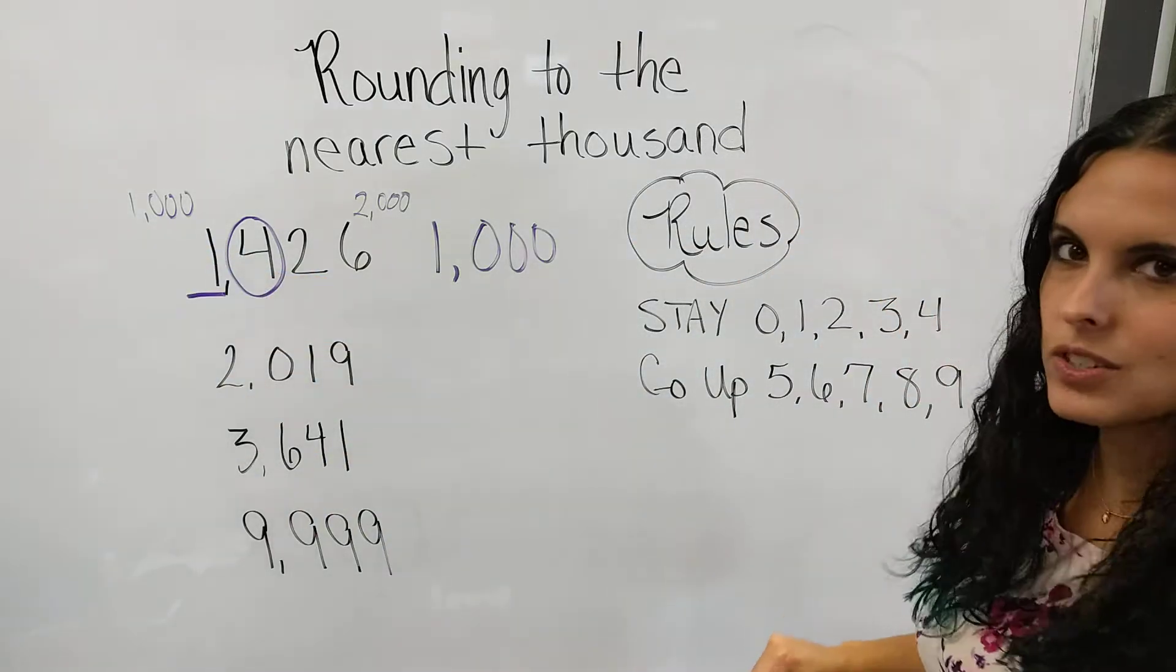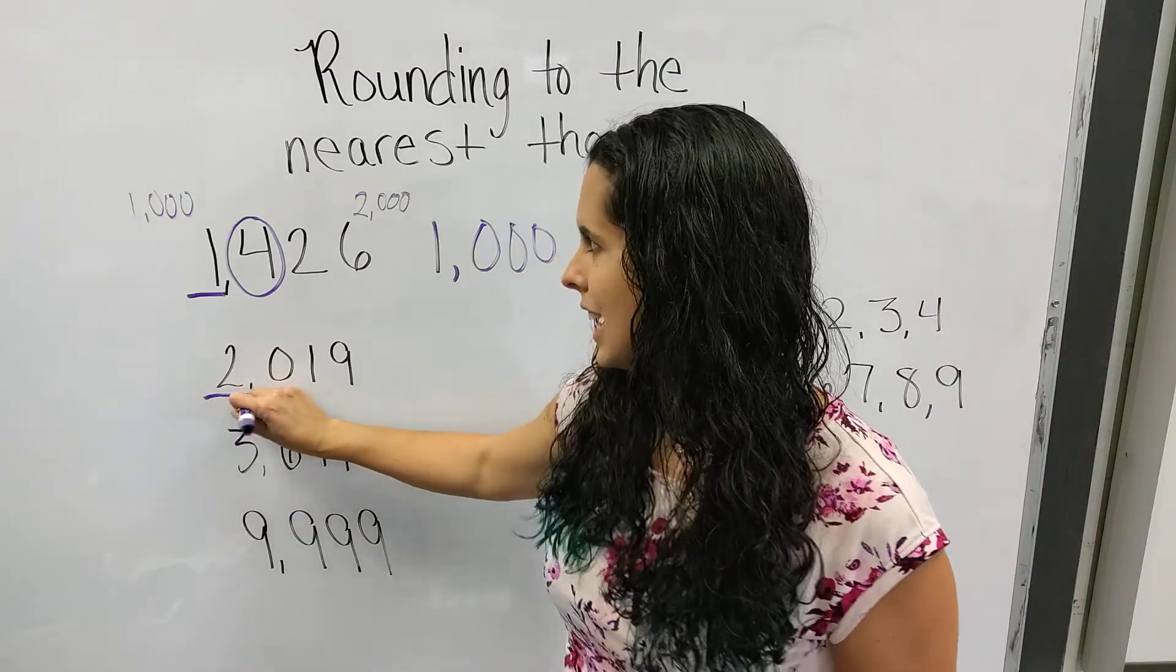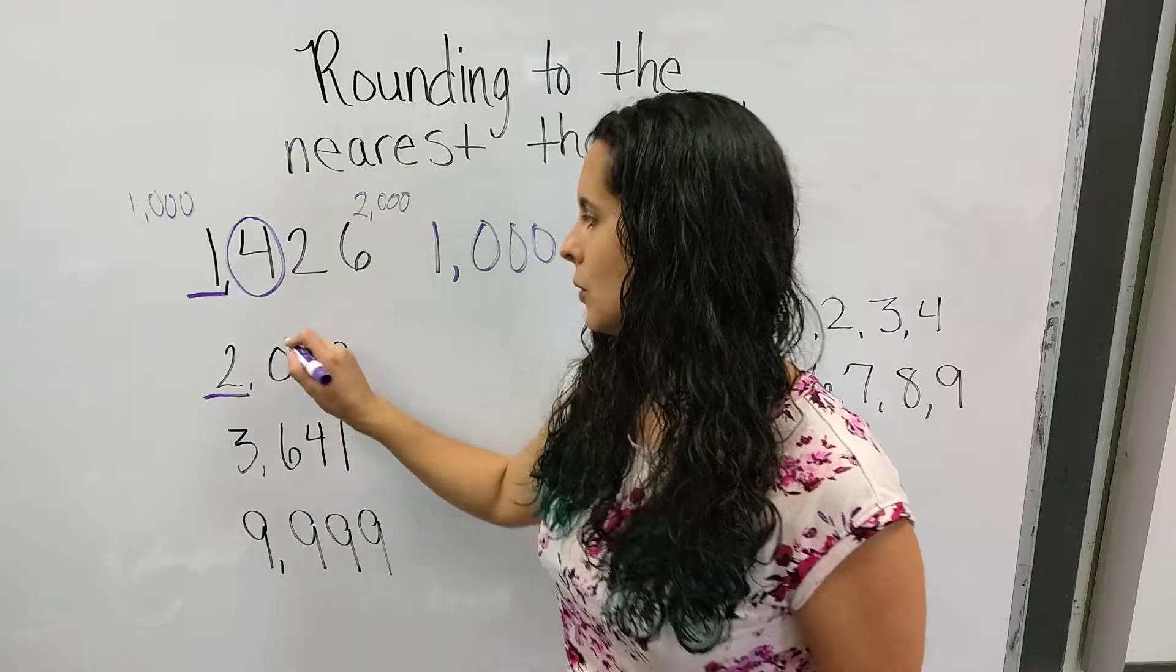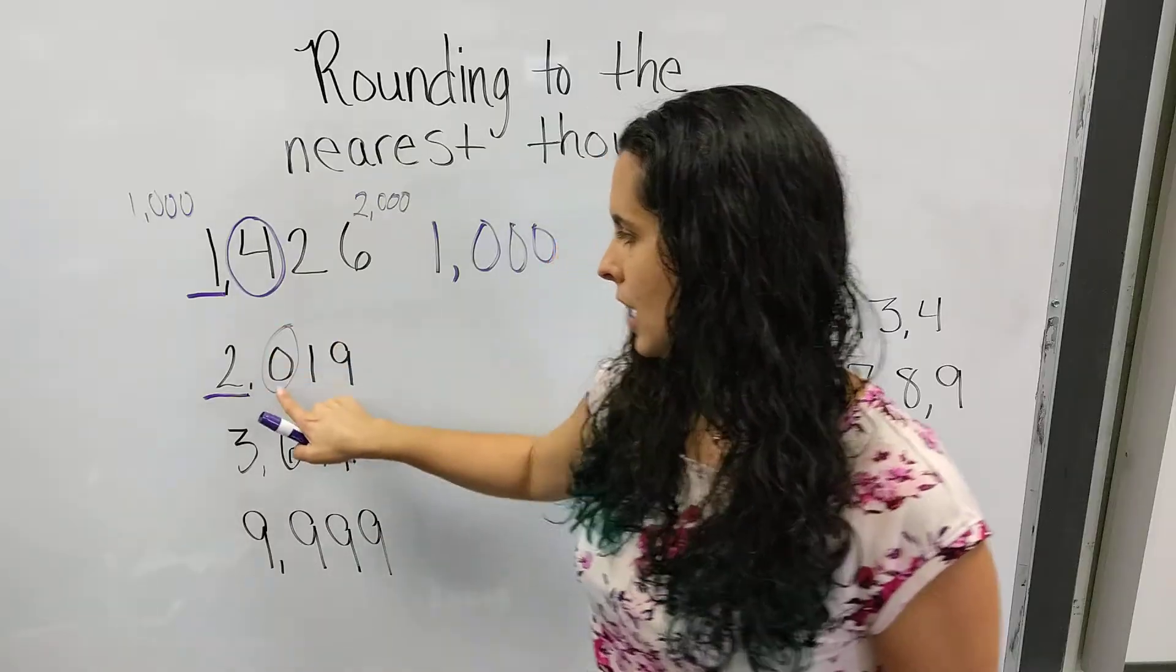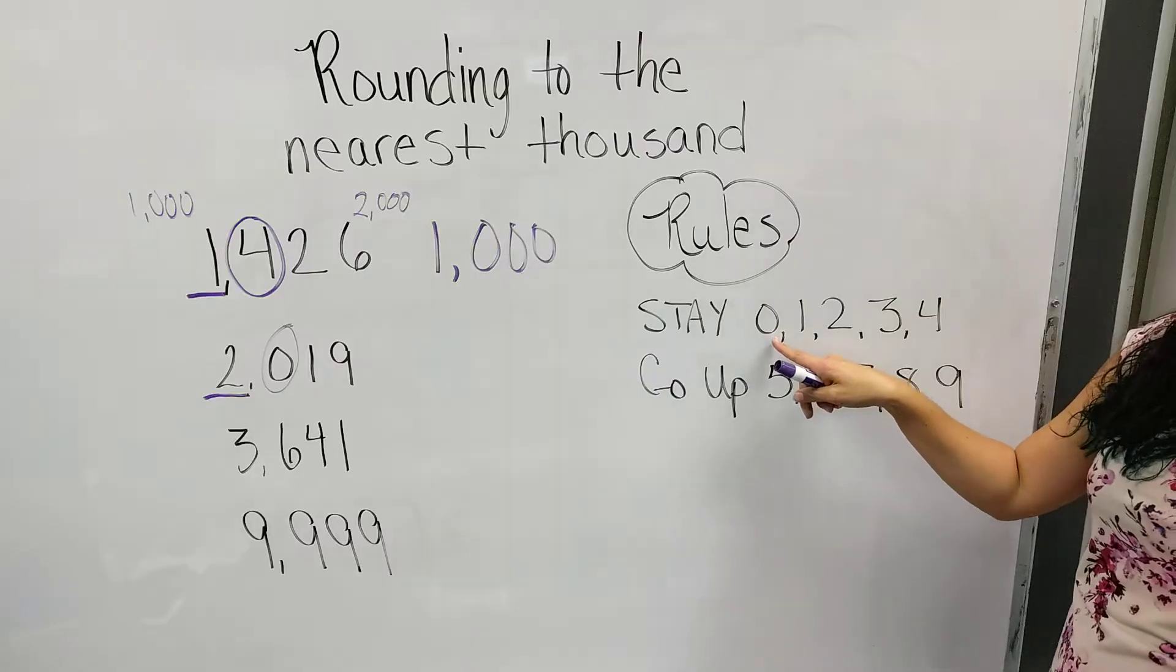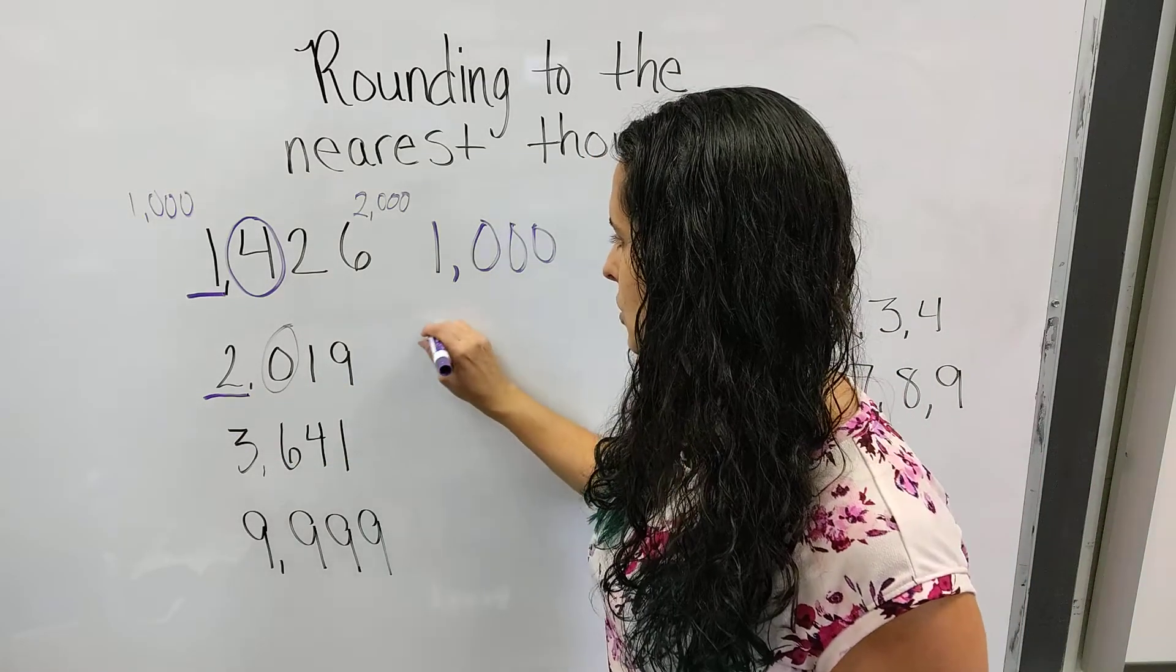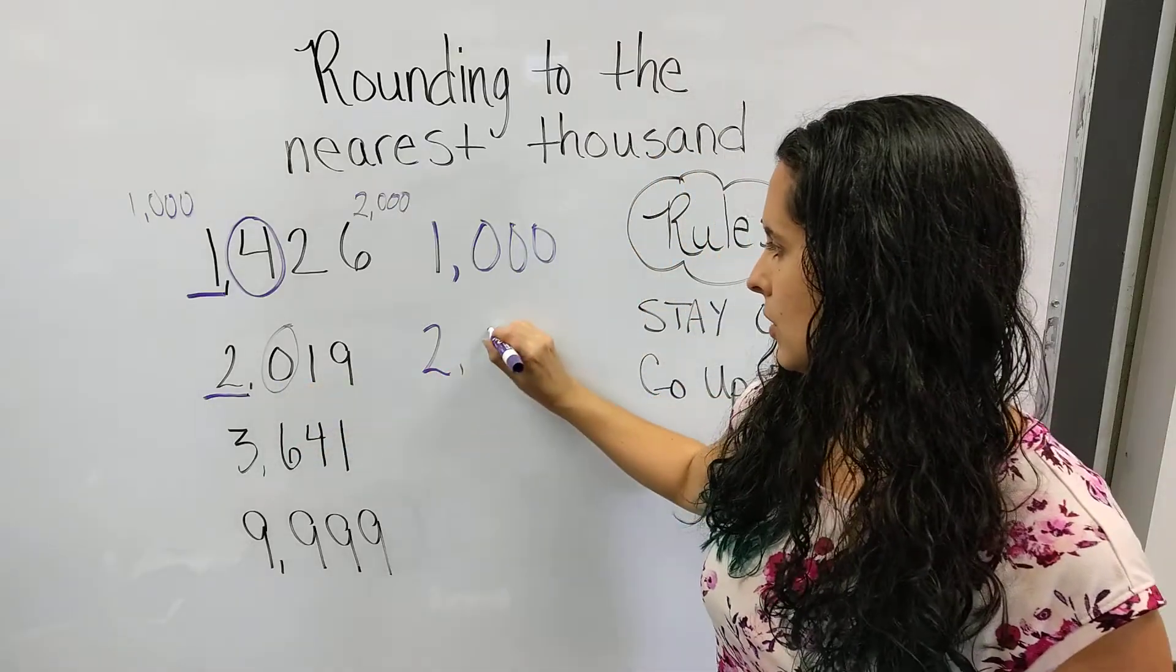Our next number is 2,019. We want to underline the number in the thousands place. It's a 2, and we want to circle the bossy number. Our bossy number this time is 0, and on our rounding rule, 0 says stay. So it's going to tell the 2 to stay a 2, and everybody else goes to zeros.